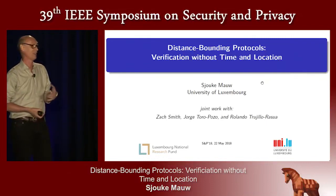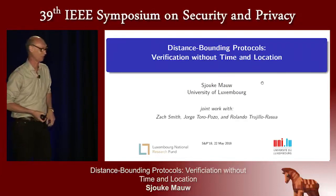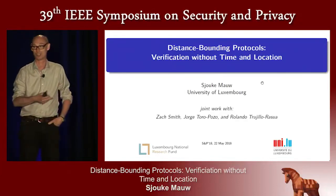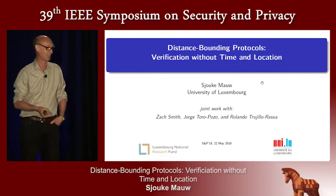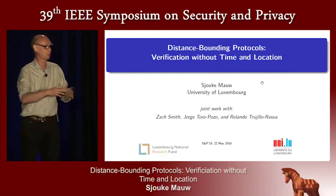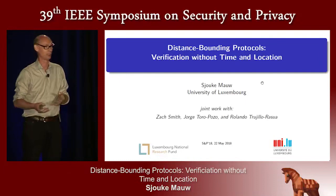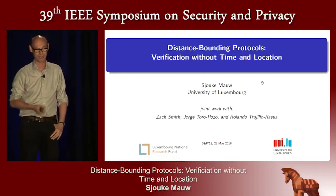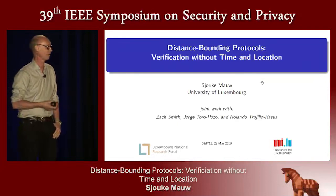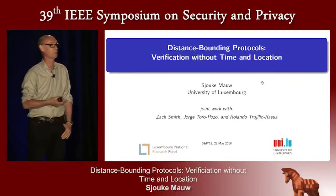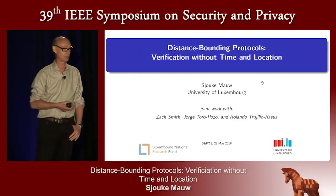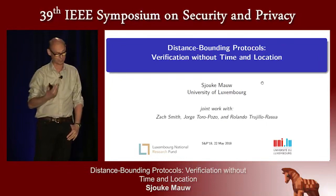Having a background in authentication protocols, I looked at the distance bounding protocols world and found they had a very attack-oriented view. There are various types of attacks and the goal is to protect against them. I'm used to having a security property that could be verified, so that set my mind thinking about how we can bring it to a more symbolic model, independent of particular attacks.